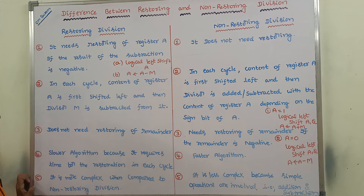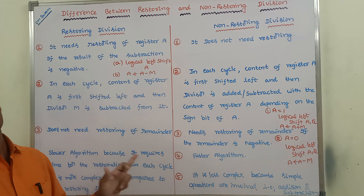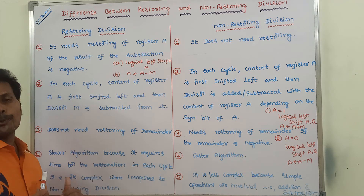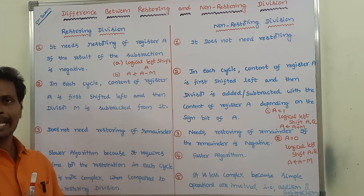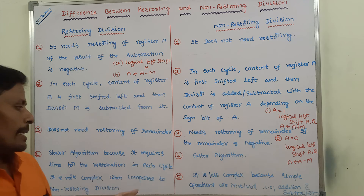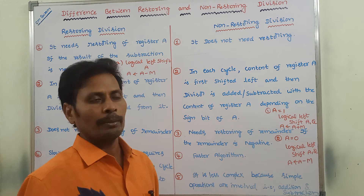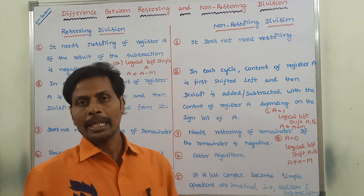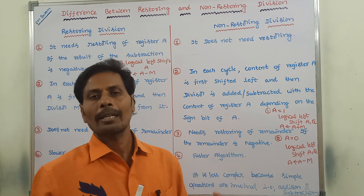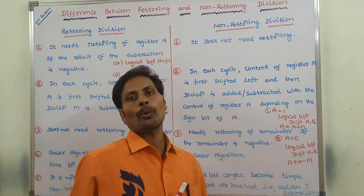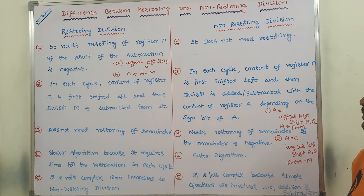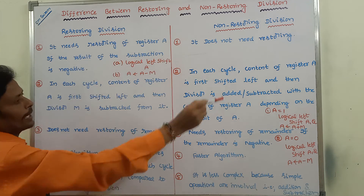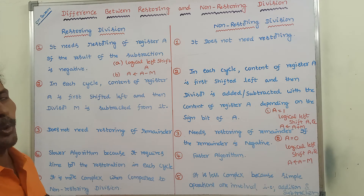Fifth point: restoring division is more complex when compared to non-restoring division. Restoring division algorithm is more complex because in each cycle it requires a restoration operation. Whereas in the case of non-restoring division algorithm, only addition and subtraction are involved — there is no restoring operation. These are the five key differences between restoring and non-restoring division algorithms.